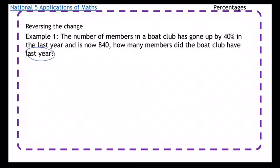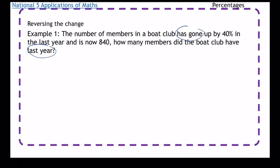So it says the number of members in a boat club has gone up by 40% in the last year and is now 840. How many members did the boat club have last year? Let's think about this: it's gone up by 40% and it's now 840.